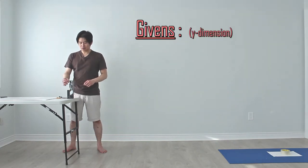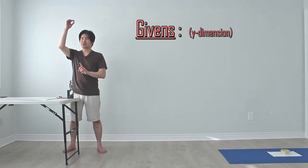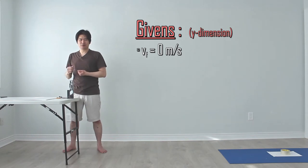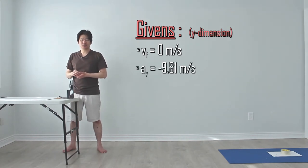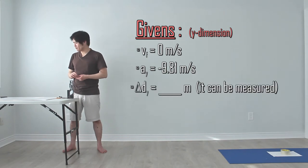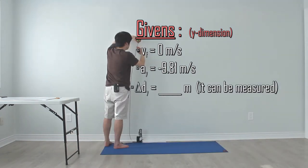Because as we launch the ball bearing straight up, at its maximum height, it's going to pause. So VF is equal to zero. We also know that this is happening here on Earth, so the object will fall at a rate of 9.81 meters per second squared. Lastly, if we pull out a ruler, we can determine its maximum height.